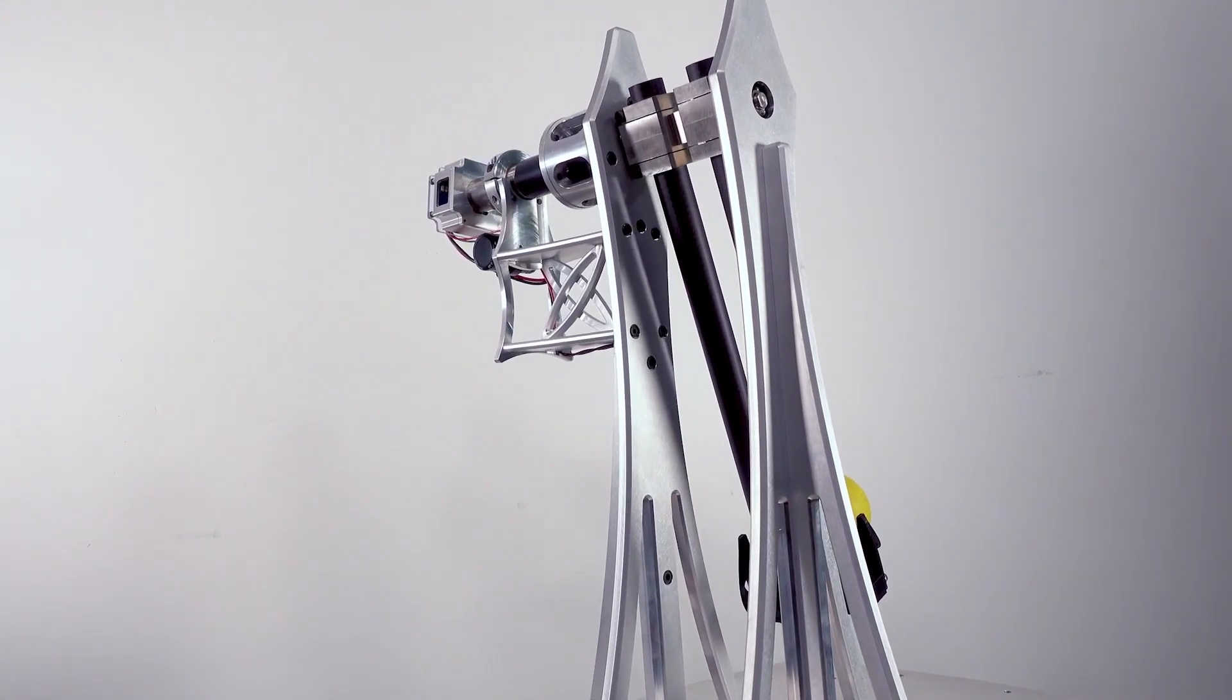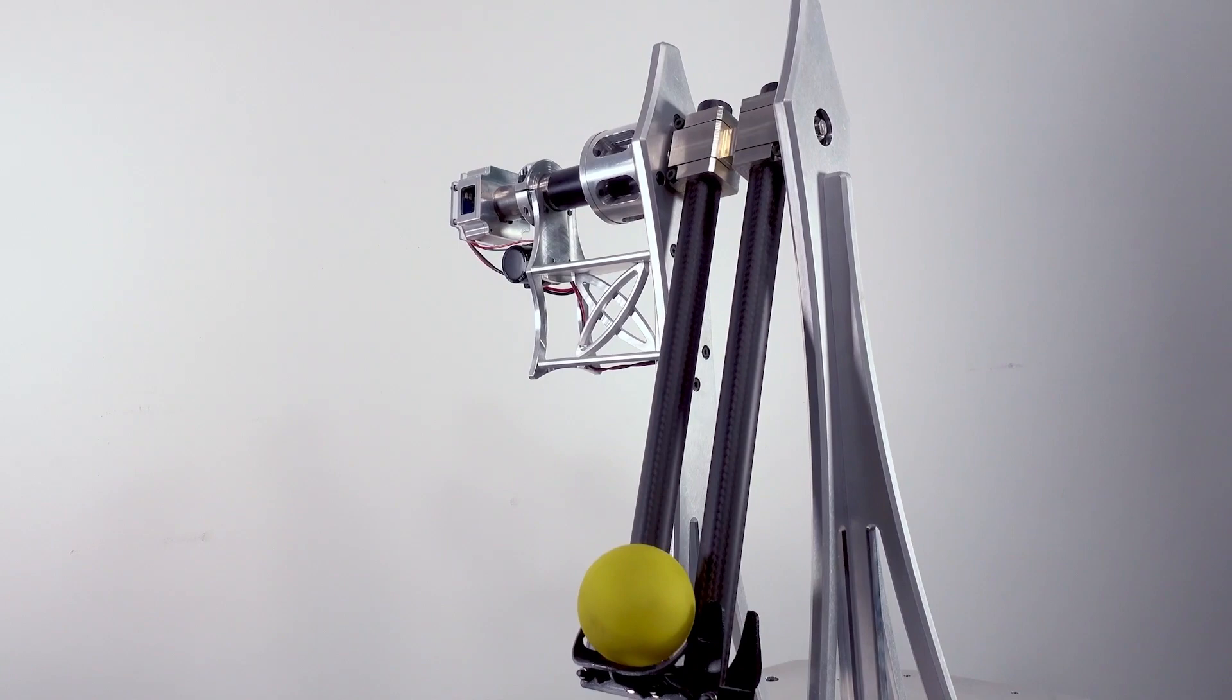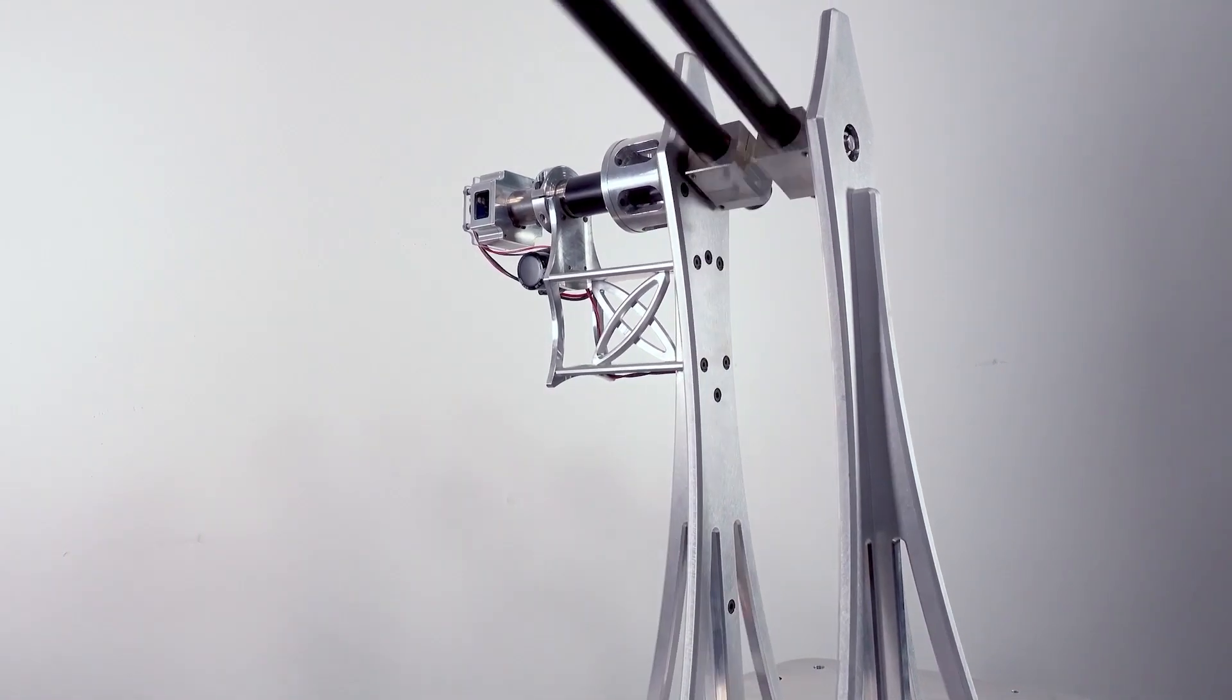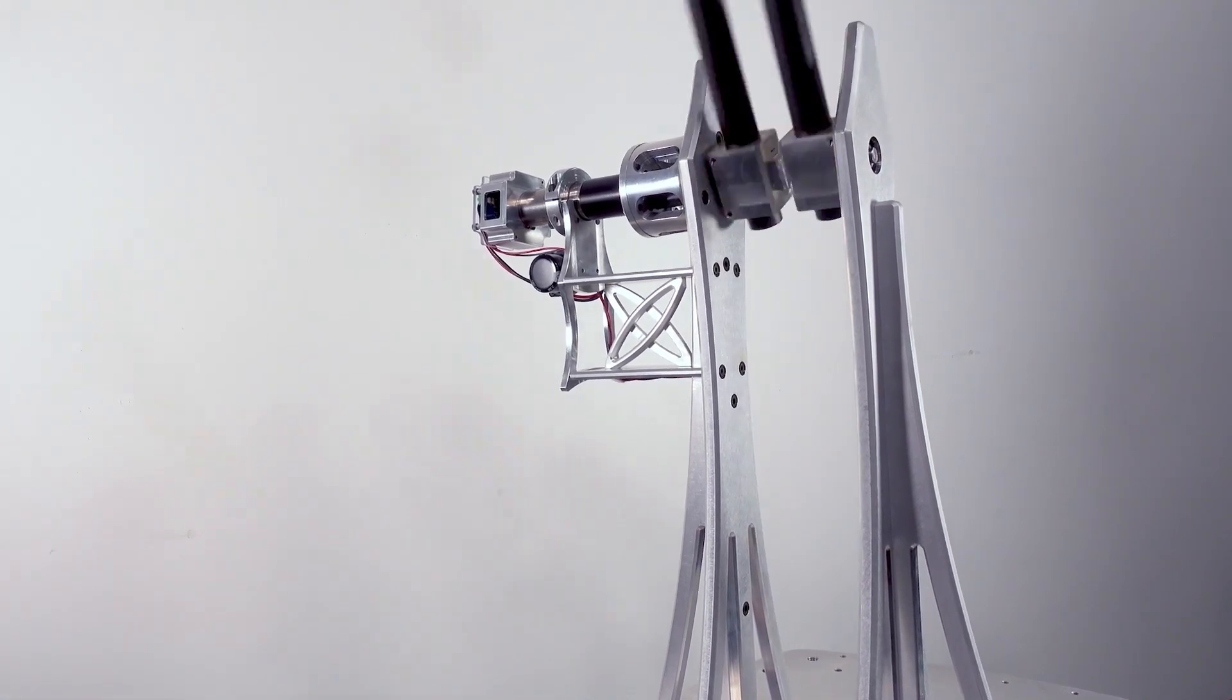The margin for error in this system is incredibly small, and the highly accurate position control made possible by the EZMotion smart motor module allows this device to reliably throw and catch a ball back and forth without any features to track the ball in flight.